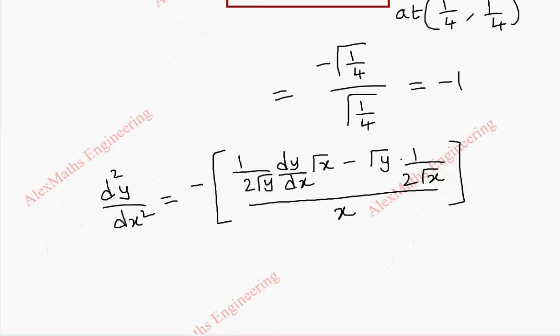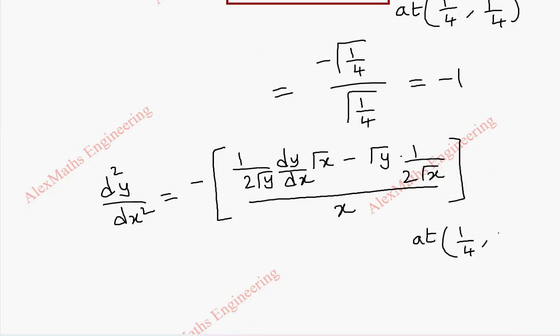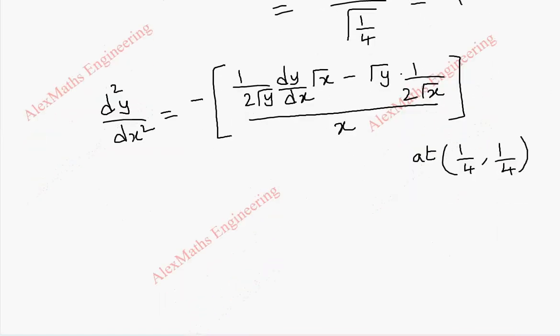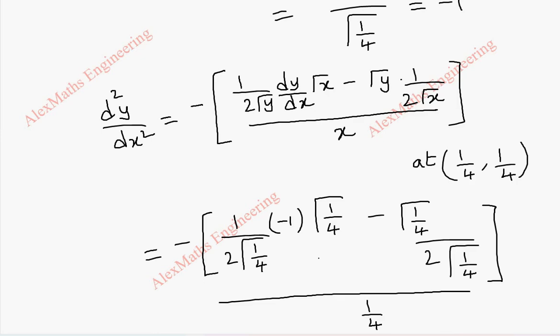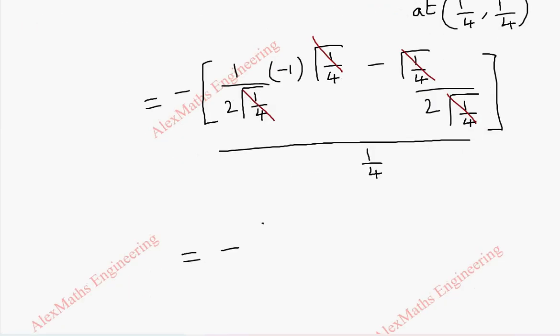And we have to use the value, the point is 1 by 4 comma 1 by 4 for x and y. So, minus, this is 1 by dx is minus 1 and again root 1 by 4 then root 1 by 4 by 2 root 1 by 4 and whole divided by x which is 1 by 4. So, here we can easily cancel root 1 by 4. So, the numerator we left with minus and outside minus 1 by 2 again minus 1 by 2 whole divided by 1 by 4.